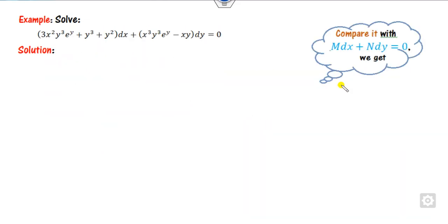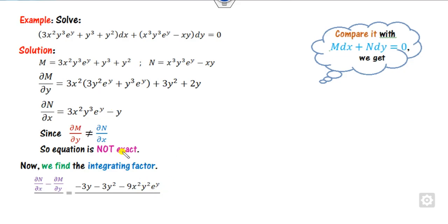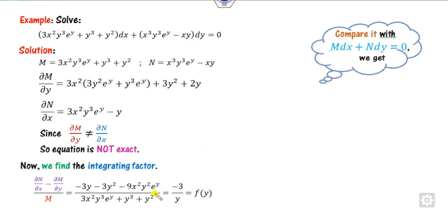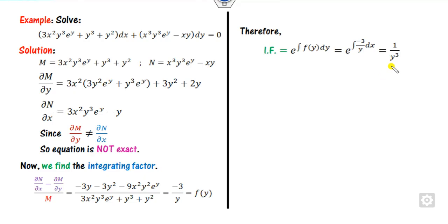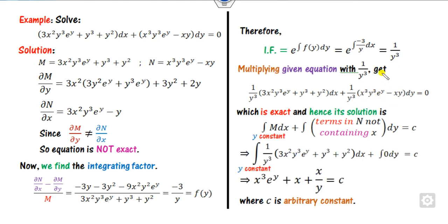For the sixth example, check M and N — it is not exact. Subtract them to get the result. With three terms, dividing by N would not work well, so divide by M to get minus 3 divided by y. The integrating factor is 1 upon y cubed. Multiply the differential equation by 1 over y cubed — there are no terms independent of x in the result, so that is the right answer.